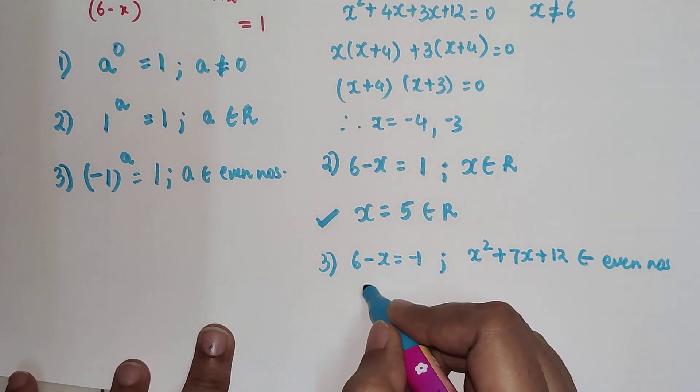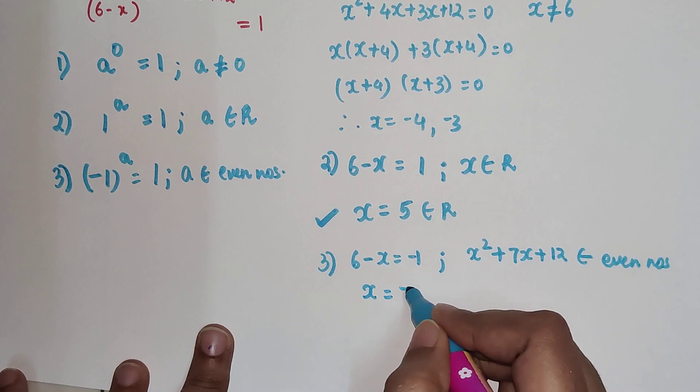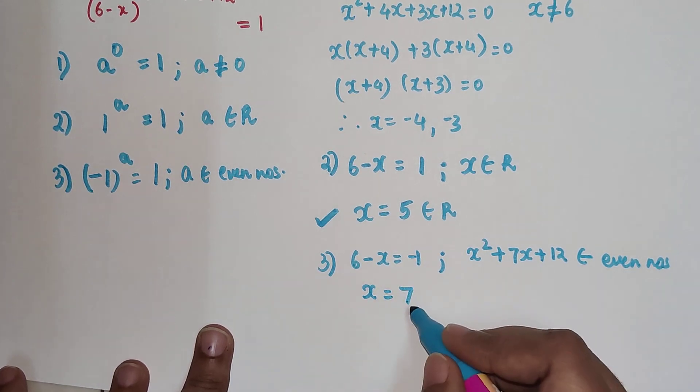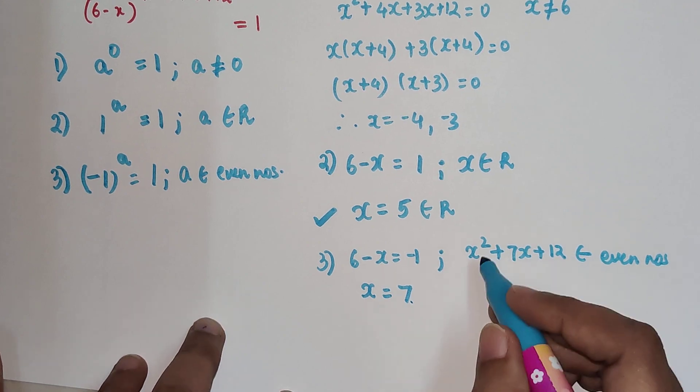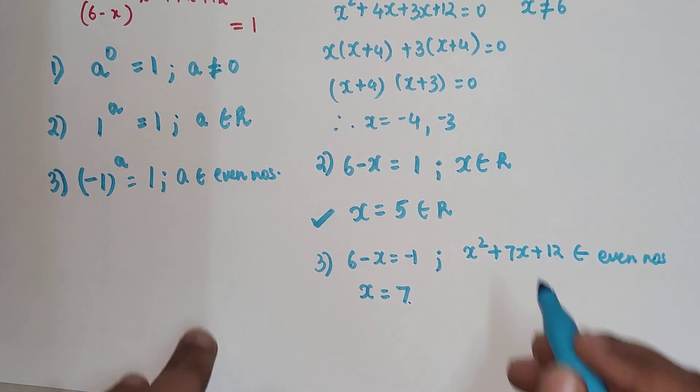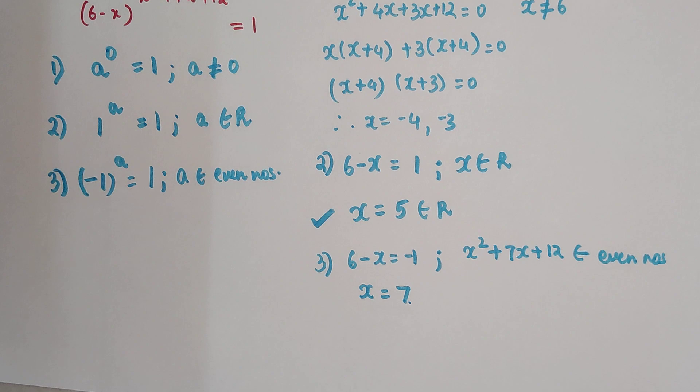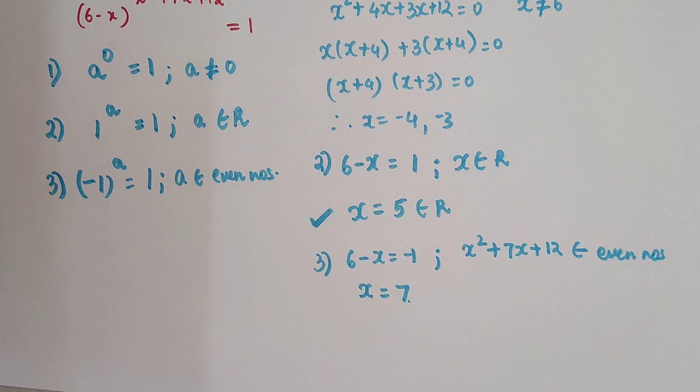So from here we can say that x value is 7. Now let's put the value of 7 over here and check whether the index, or rather the final answer of the index, is coming out to be even. If it's coming out to be even, then we're good to go, we can take this value as well.